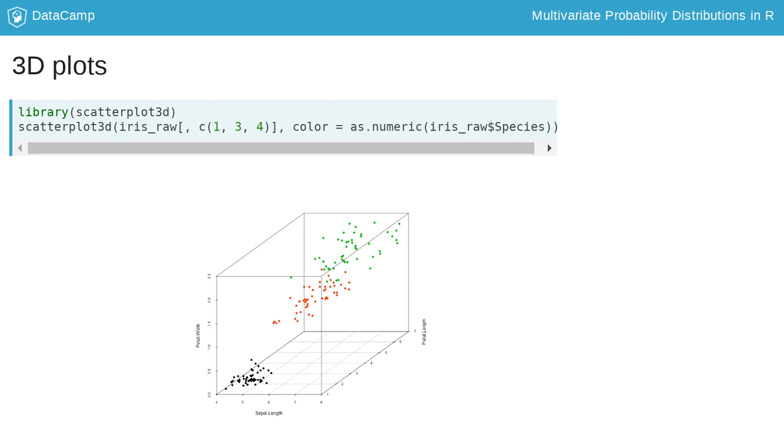In this example, we plotted the sepal length, petal length, and petal width, and colored them by species. The first argument for scatterplot3D function is the columns of the data containing the variable of interest, and the second argument specifies what to color the points by using the argument color equals as.numeric iris_raw dollar sign species.